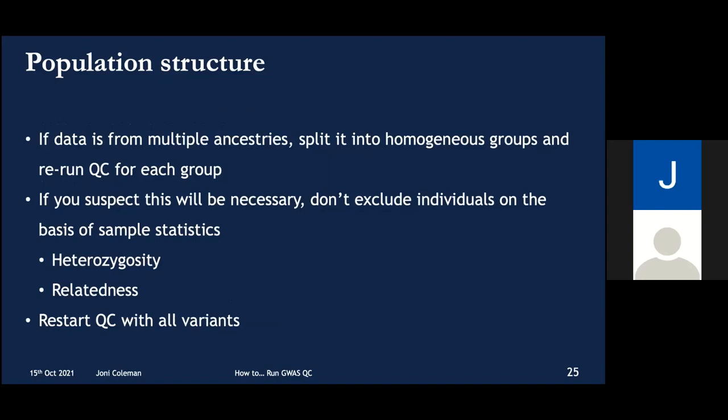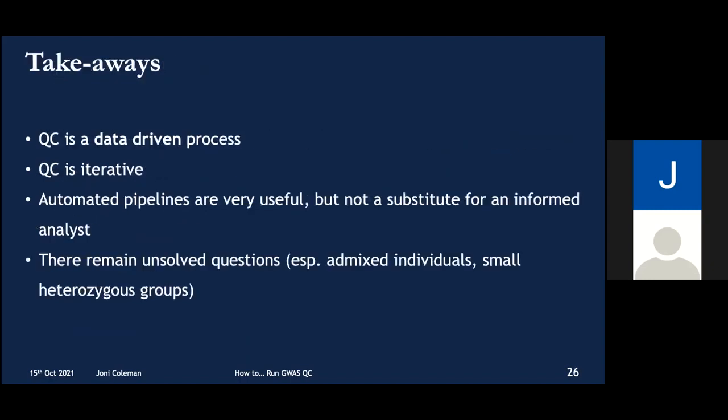Ancestry is important to QC. Many of the processes I've talked about rely on the groups being assessed being fairly homogeneous. As such, if your data is multi-ancestry, it's best to separate those ancestries out and rerun QC in each group separately. So that was a brief run through of some of the key things to think about when running QC. I hope I've got across the need to treat this as a data-informed process, and to be willing to rerun steps and adjust approaches to fit cohorts.